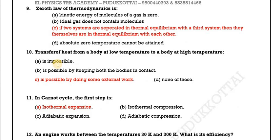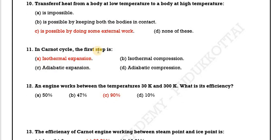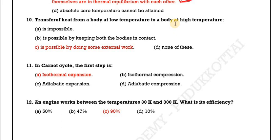Question 9: The zeroth law of thermodynamics states that if two systems are each in thermal equilibrium with a third system, then they themselves are in thermal equilibrium with each other. Regarding heat transfer from a low temperature body to a high temperature body — such transfer is impossible without doing some external work.